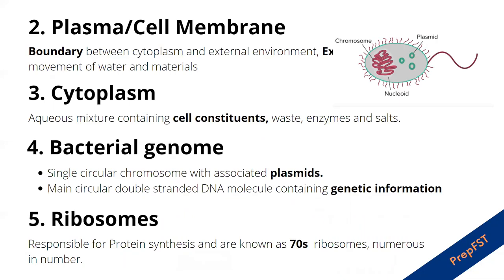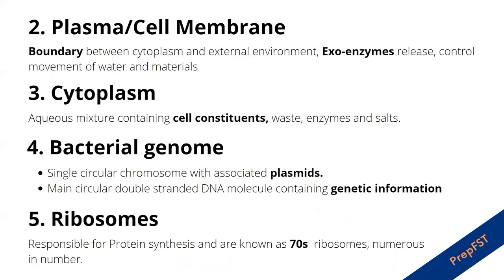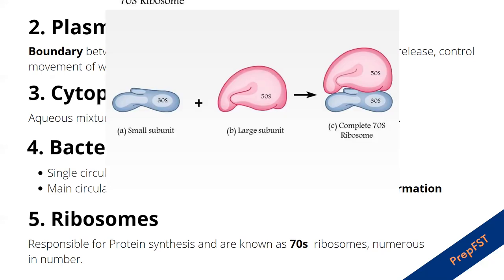The bacterial genome lacks a proper nucleus, so it contains two types of chromosomal material: a single circular chromosome with associated plasmid, and the main DNA molecule containing all the genetic information. Plasmids are small pieces of hereditary material separate from the main chromosomal material, containing very few genes — about 5 to 10 — which are not essential to the survival of the cell. Ribosomes are responsible for protein synthesis; bacteria have 70S type ribosomes and they are very numerous.